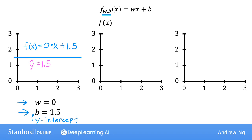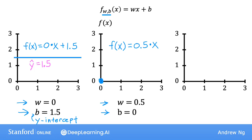As a second example, if w is 0.5 and b is equal to 0, then f of x is 0.5 times x. When x is 0, the prediction is also 0. And when x is 2, then the prediction is 0.5 times 2, which is 1. So you get a line that looks like this. Notice that the slope is 0.5 divided by 1, so the value of w gives you the slope of the line, which is 0.5.